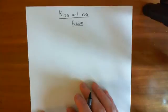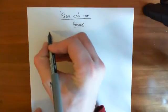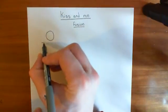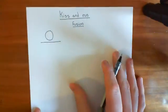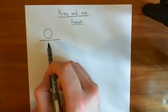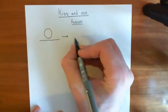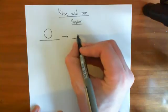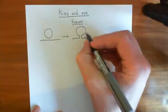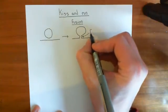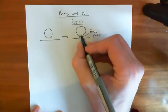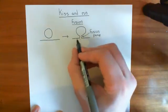So let's start off with what kiss-and-run fusion actually is. If we have a synaptic vesicle docked at a presynaptic membrane, when the signal comes for this vesicle to actually fuse with the presynaptic membrane, what seems to happen is that initially you get a small tube forming between the synaptic vesicle membrane and the plasma membrane. This small lipid tube is known as a fusion pore.